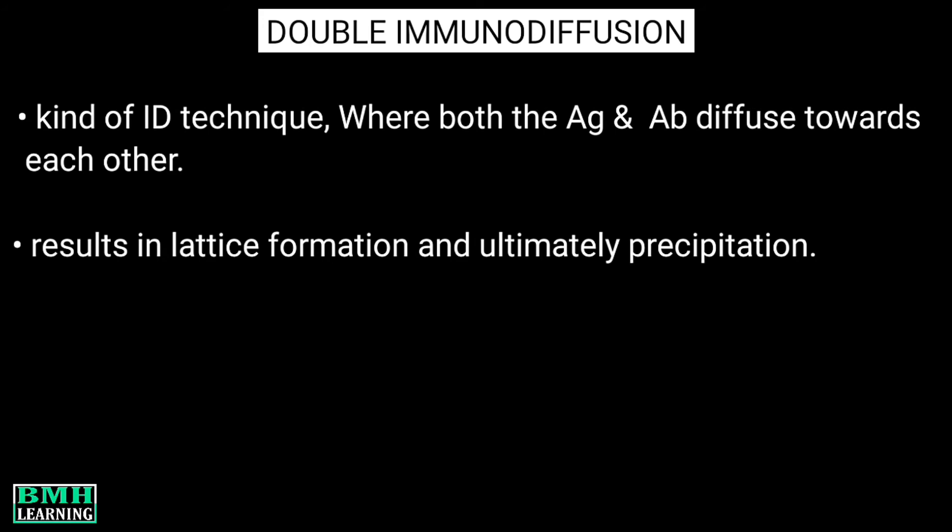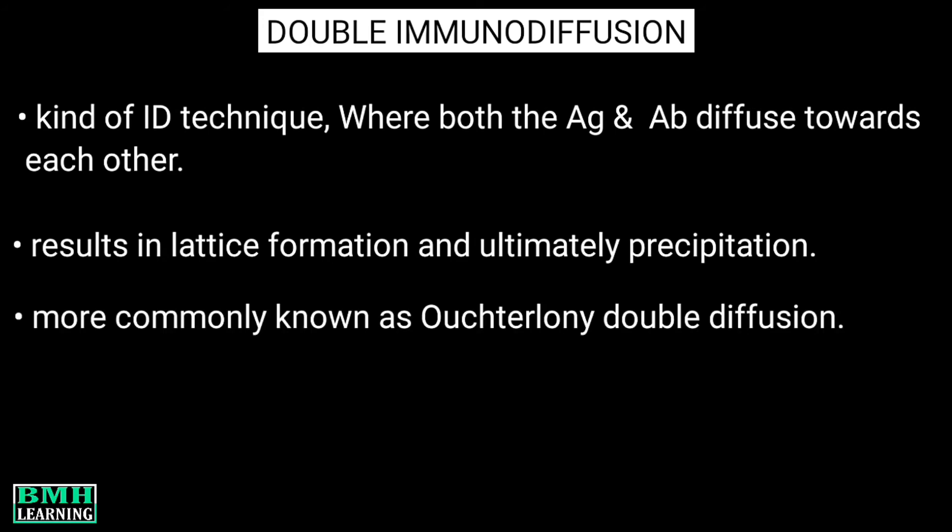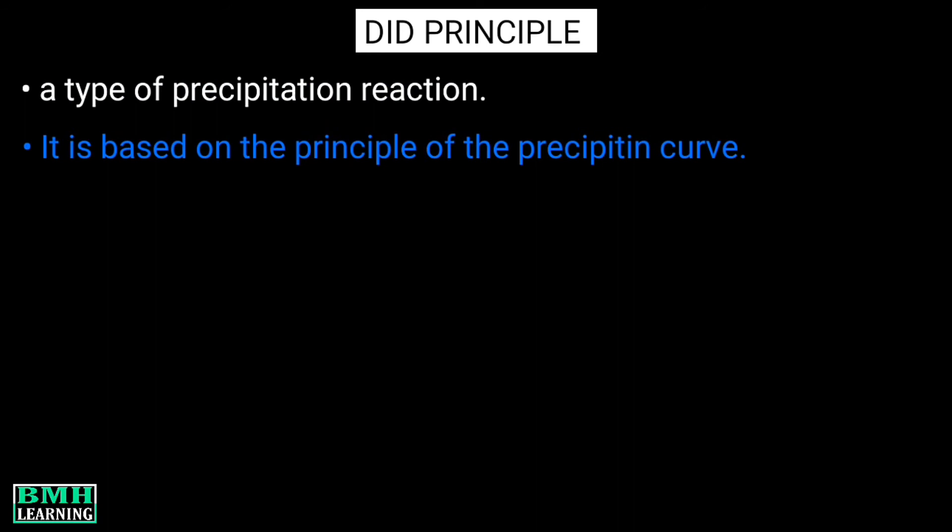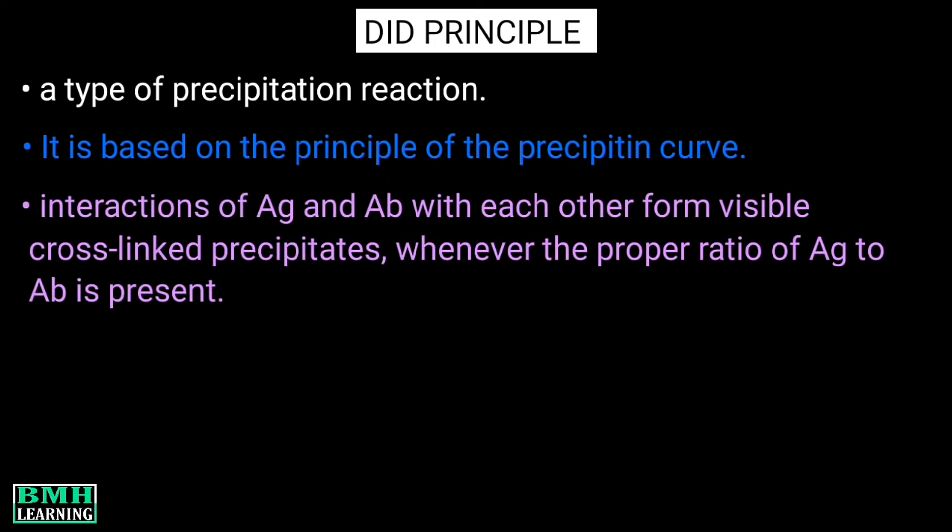This method is more commonly known as Ouchterlony double diffusion. Principle of double immunodiffusion: As we know, double immunodiffusion is a type of precipitation reaction. That means it is based on the principle of the precipitin curve. The principle of the precipitin curve states that interactions of antigen and antibody with each other form visible cross-linked precipitates whenever the proper ratio of antigen to antibody is present.